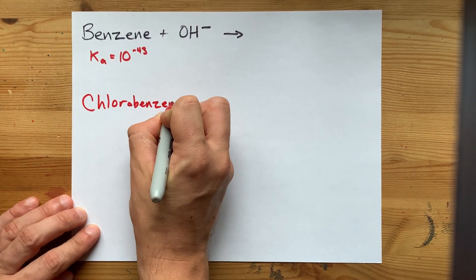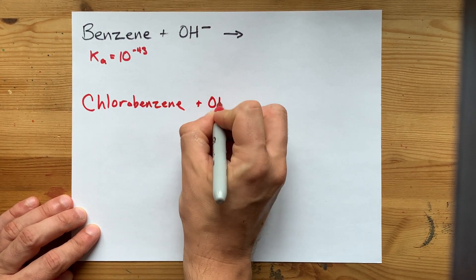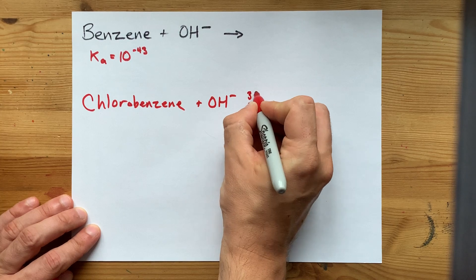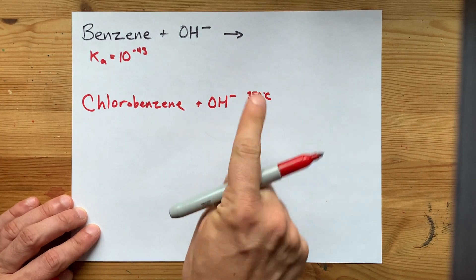What your teacher might be asking you about is, can chlorobenzene react with hydroxide ions? And the answer is yes, at a high enough temperature.